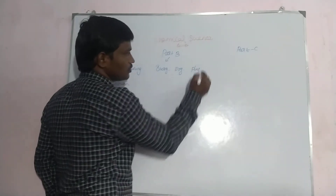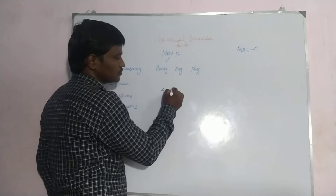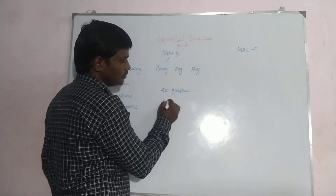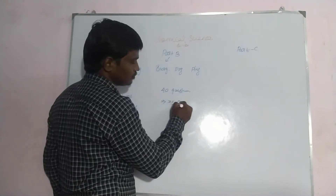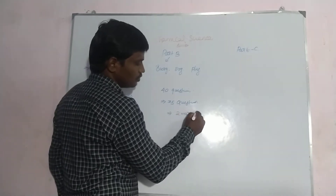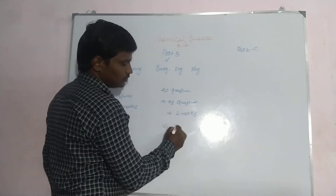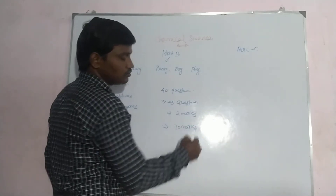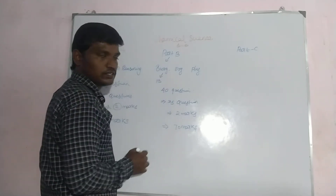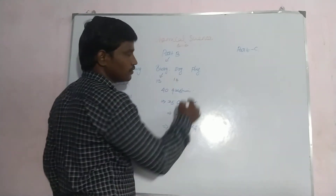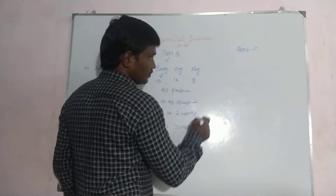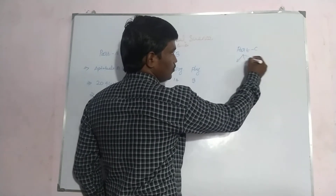In Part B, physical chemistry is also included. They will ask 40 questions; you must attempt 35 questions. Each question is 2 marks, so you will get 70 marks on your Part B chemistry syllabus. Sometimes inorganic chemistry has 13 questions, organic has 14 questions, and physical chemistry has 13 questions.